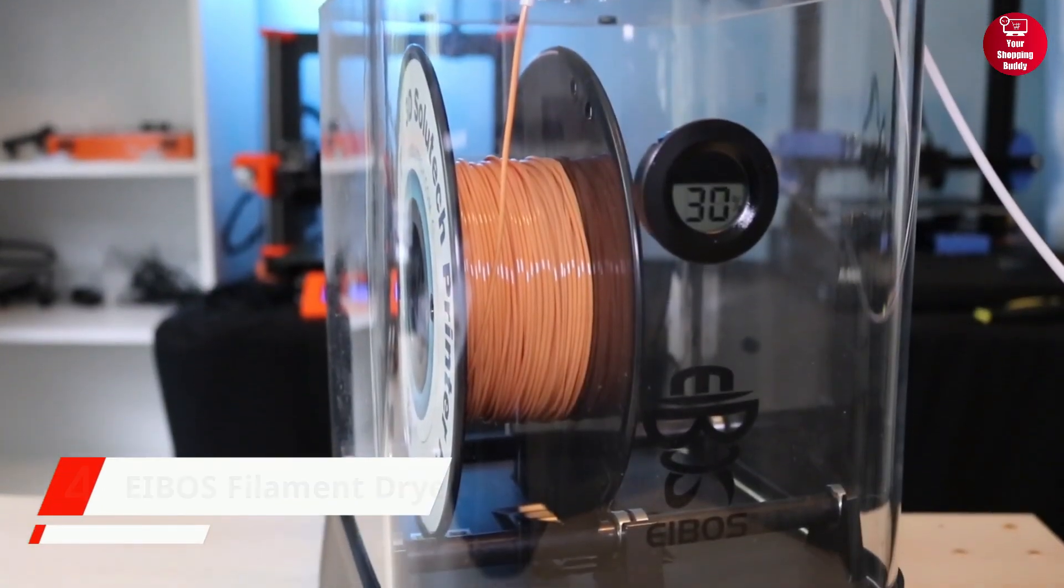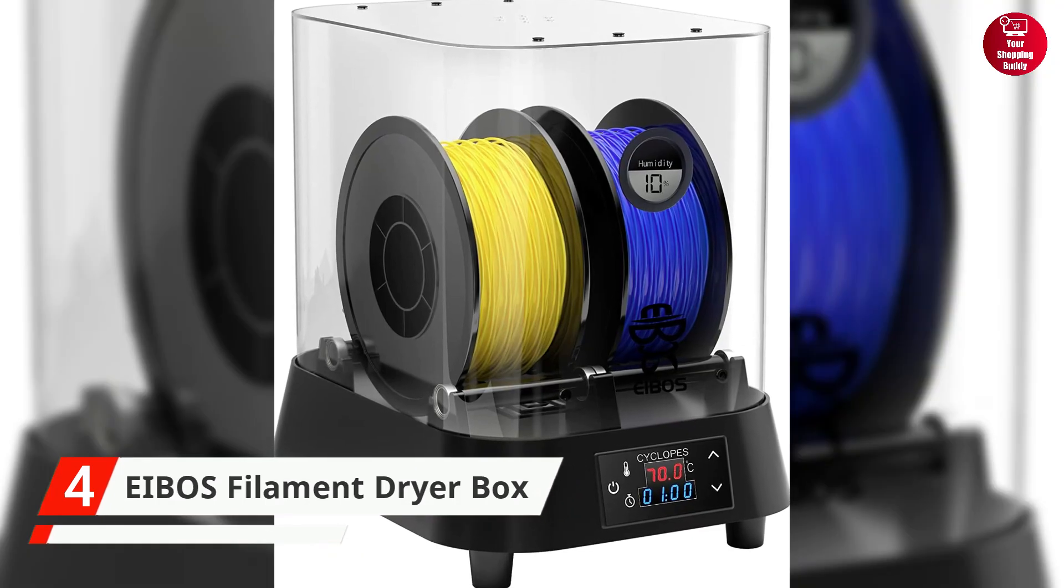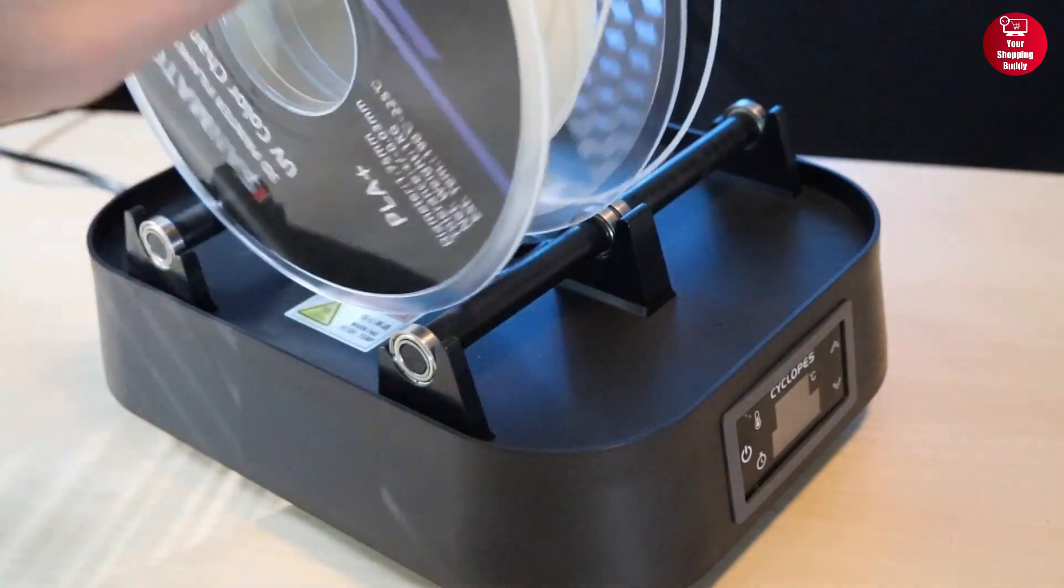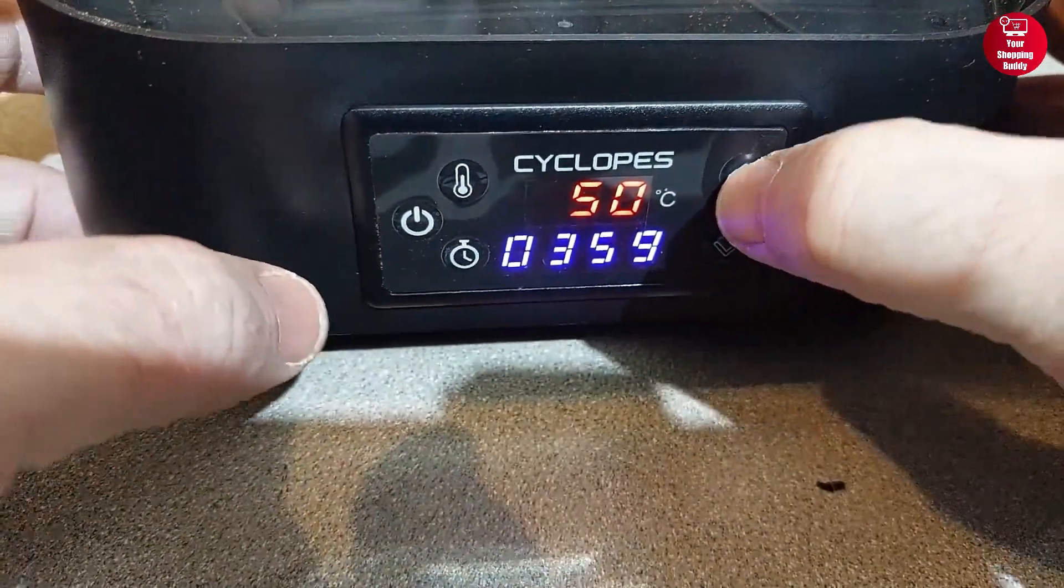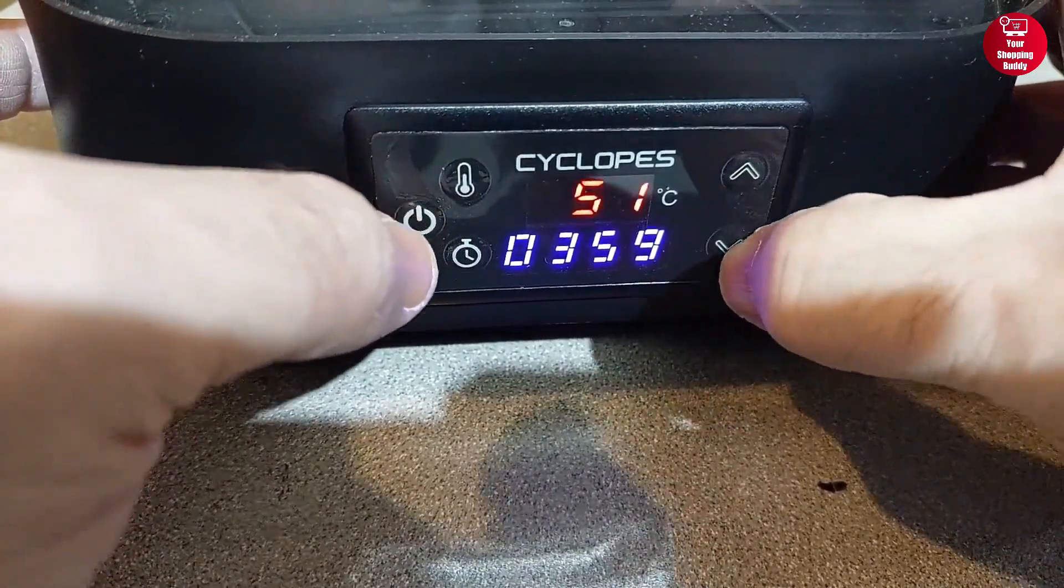The iBose Filament Dryer Box is designed to remove moisture from 3D printer filament caused by exposure to the environment. It has a secure and sealed protection to keep impurities out, and has temperature adjustability with an LCD indicator that shows both the actual and setting temperature.